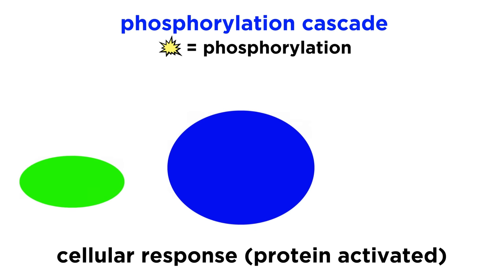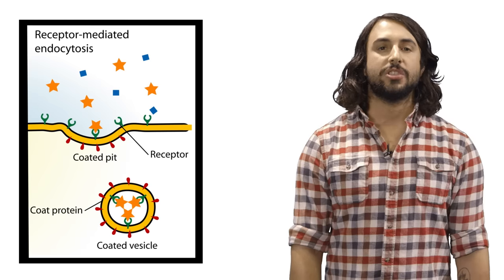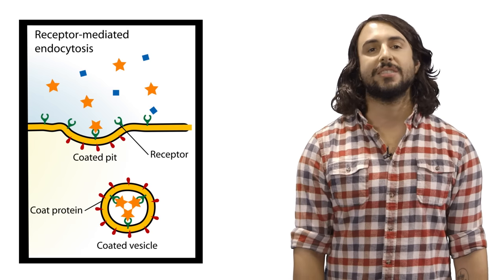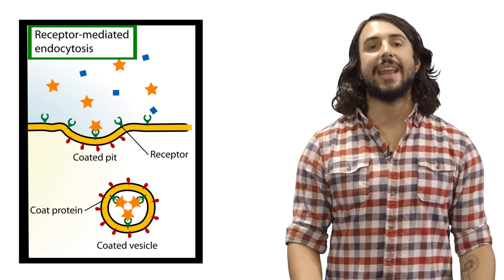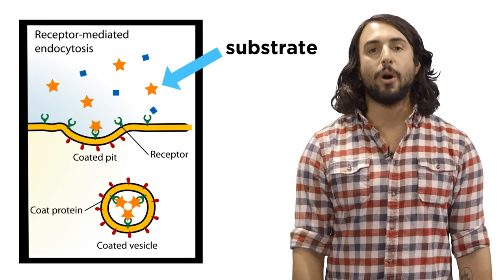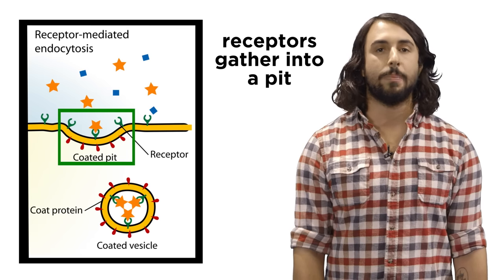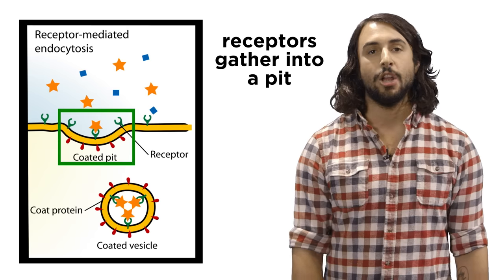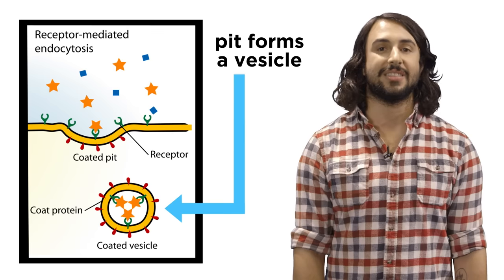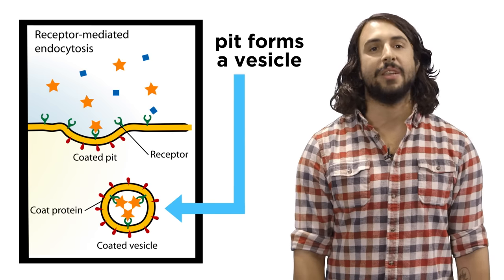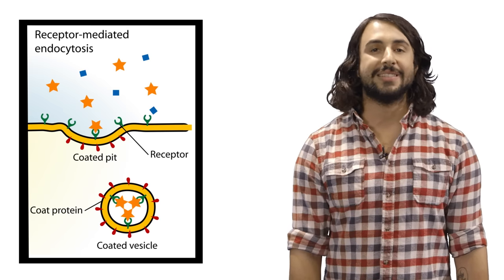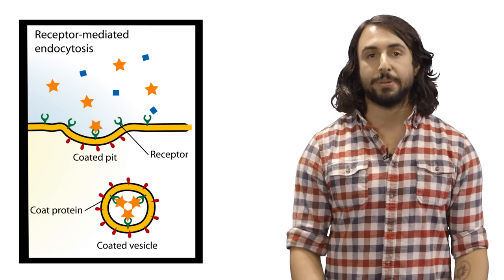This will eventually reach its destination and elicit a cellular response. Some other receptors allow for the absorption of bulk quantities of a particular substance through a process called receptor-mediated endocytosis. This happens when several molecules of a particular substrate bind to multiple receptors, and the receptors cluster into a pit, which can pinch off from the plasma membrane to form a vesicle, thus bringing the molecules bound to the receptors inside the cell, as well as any other solute that may have been inside the pit. This material will then be liberated from the vesicle somewhere inside the cell, and the receptors will return to the plasma membrane.